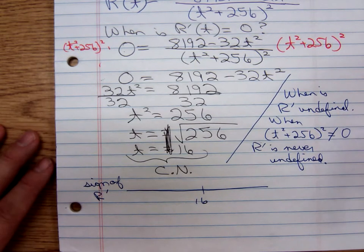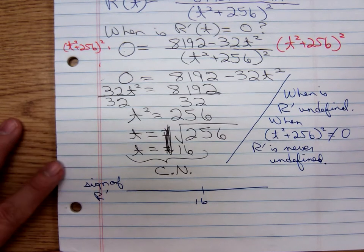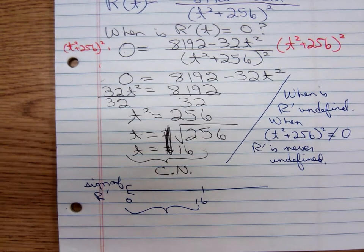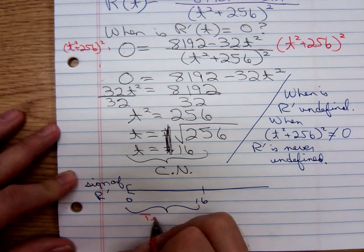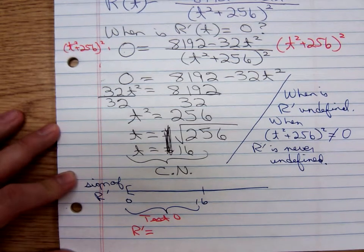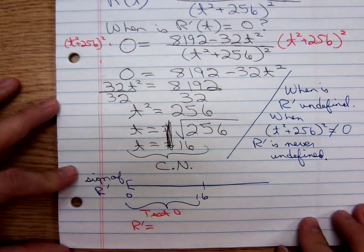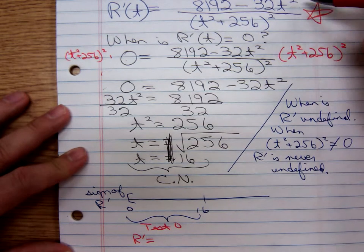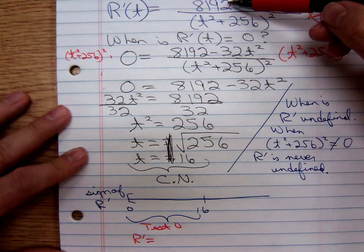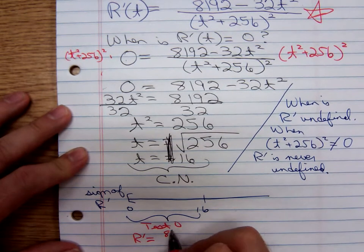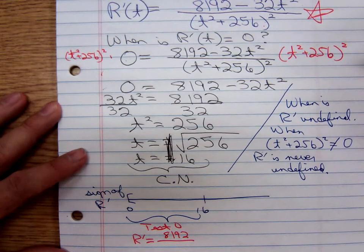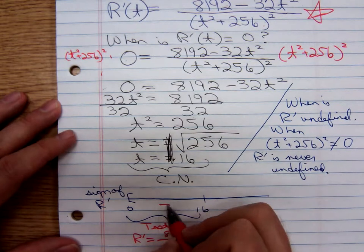We're getting back to our number line. What's the smallest number I could test to the left of 16? Zero. I could test zero and that's an easy number to plug in. So that's what I'm going to test. Testing zero. We have R' equals—where's the derivative? I'm going to lose the derivative. There it is right there. Plugging in zero, here's the derivative. We have an 8,192 minus zero. So that's just an 8,192. What's the sign on this derivative? Realize it's quantity squared. It's always going to be positive. Positive divided by positive, that's positive. So increasing.